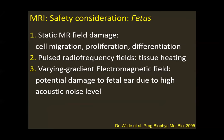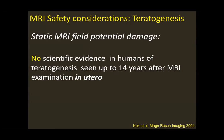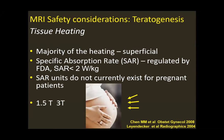There are certain safety concerns related to MRI for the fetus. The static MRI field can affect cell migration, proliferation, and differentiation in theory. The pulsed radio frequency field can cause tissue heating. And the varying gradient electromagnetic field can cause potential damage to the fetal ear due to high acoustic noise levels. However, there is no scientific evidence in humans of teratogenesis seen up to 14 years after MRI examination in utero. The static MRI field potential damage has not been documented. When we talk about tissue heating in MRI, we operate with SAR — specific absorption rate — units, which are regulated by the FDA and should be less than 2 watts per kilogram.